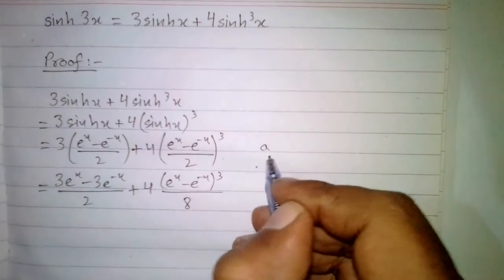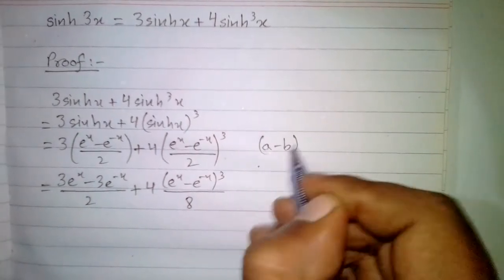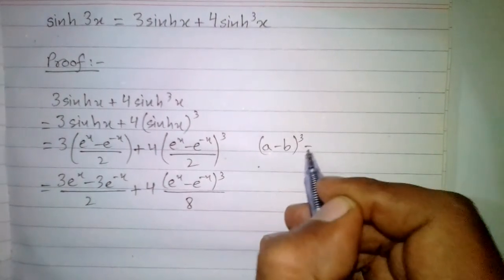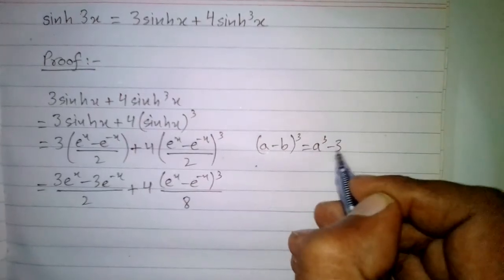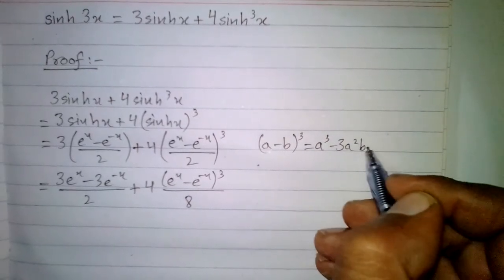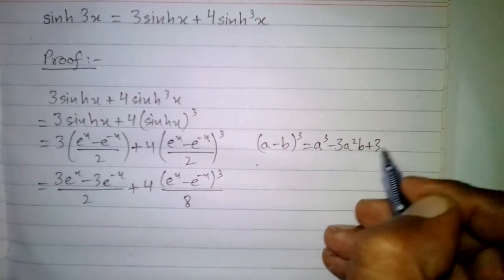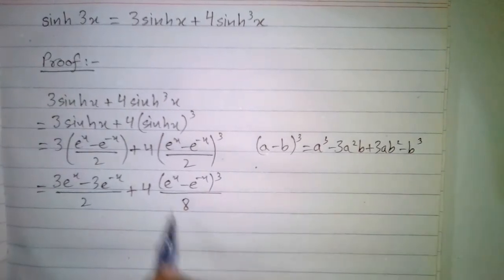Now we can use the formula: a minus b, whole cube, is equal to a cubed minus 3a squared b plus 3ab squared minus b cubed, for this expansion.